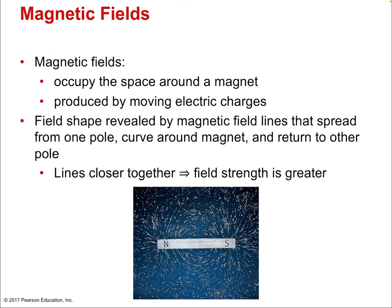Just like with electric charges, there is the abstract idea of the field — here, the magnetic field. The magnetic field occupies the space around a magnet. You can visualize it by putting certain metals within the field, since easily magnetized metals will line themselves up with the field lines. The field shape is revealed by magnetic field lines that spread from one pole, curve around the magnet, and return to the other. Where the lines are closer together, the field strength is greater.